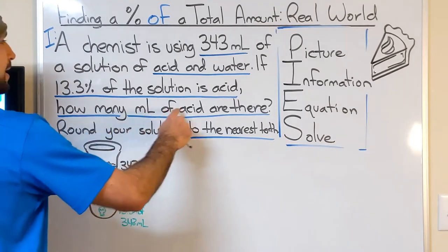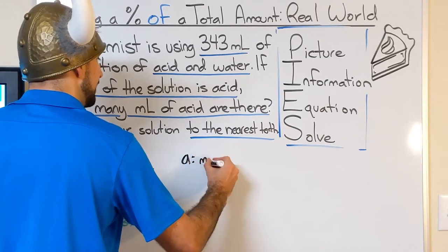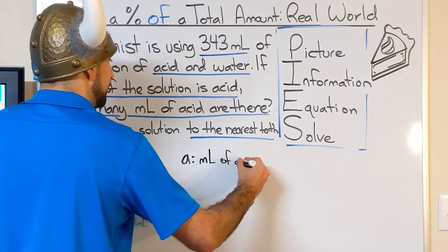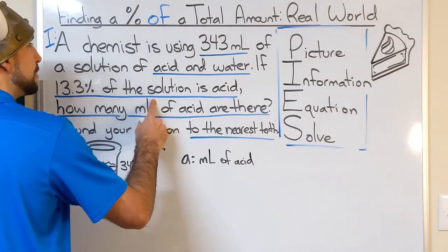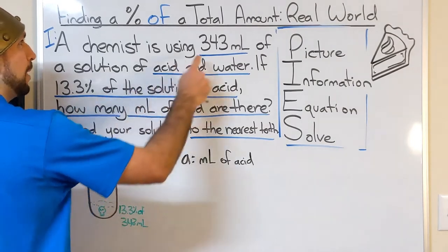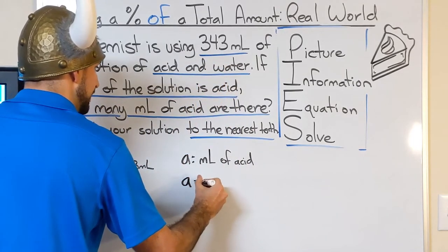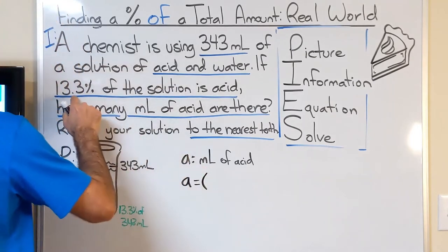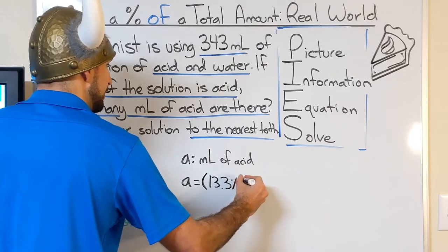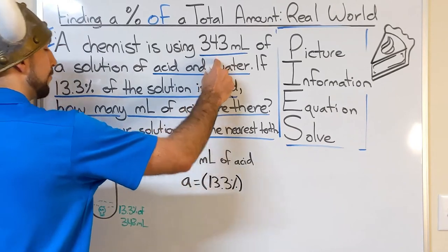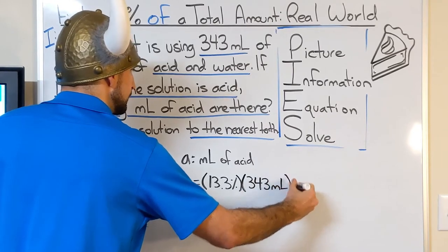So we want to find the milliliters of acid, so let's call A milliliters of acid. Again, we know that it's just going to be a percentage of the solution. So we just need to change this percentage to a decimal and find that much of the whole solution: 343 milliliters. So our acid is going to be equal to 13.3% of 343 milliliters.